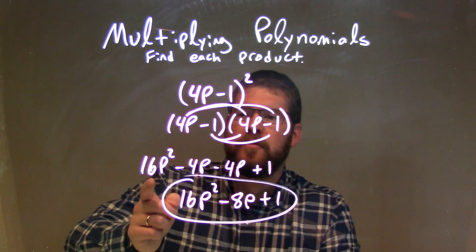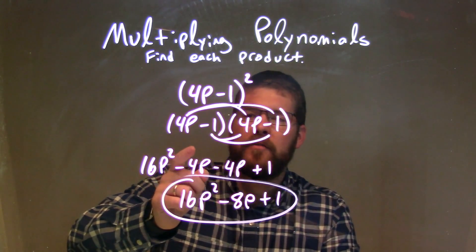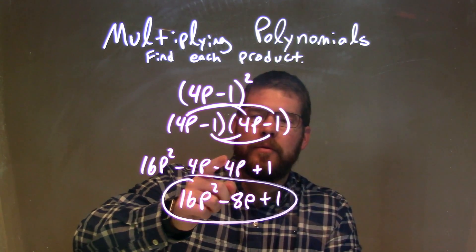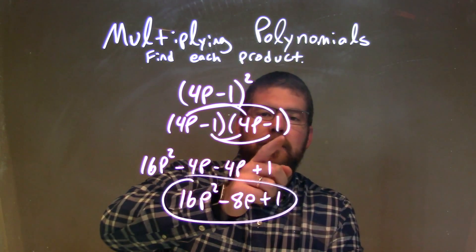4p times 4p was 16p². 4p times -1 is -4p. -1 times 4p was -4p. And -1 times -1 is +1.